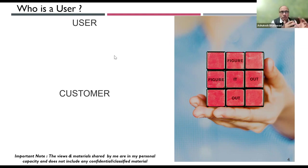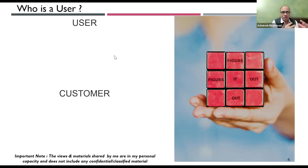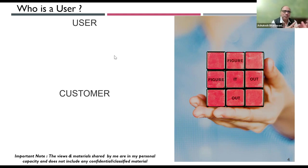Imagine you're a baby food manufacturing company — how do you decide on the taste? Your consumer, the end user who will actually consume the product, is unable to articulate their views. The mother is the customer because she buys, but the baby is the end user. As a food manufacturer, decisions like sweetness, dry fruits, or texture become very complex.